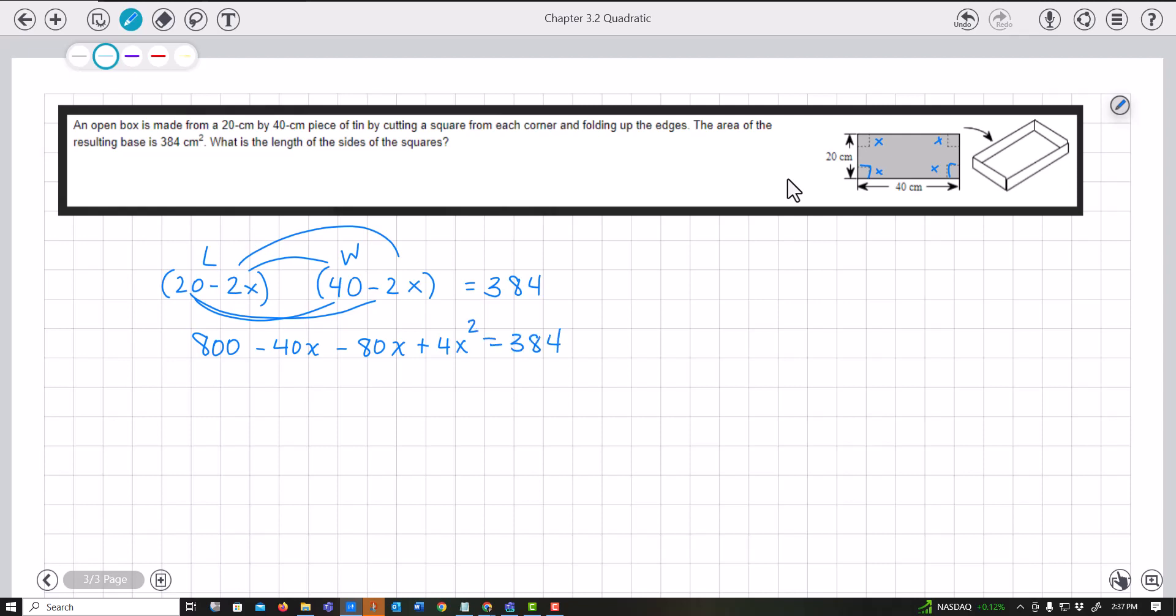Now I have a quadratic because the highest exponent is squared. I want to put this in the form AX² + BX + C = 0.